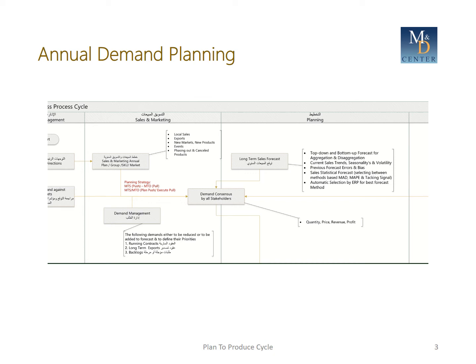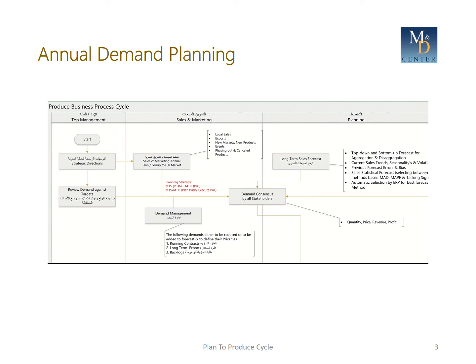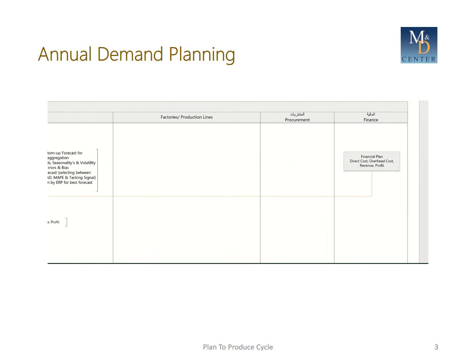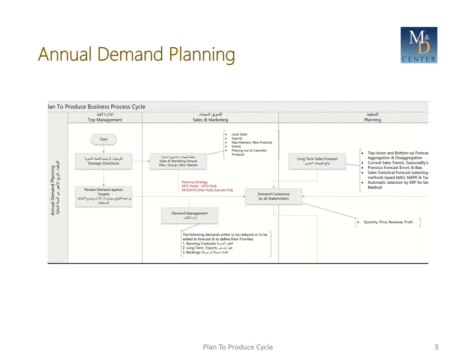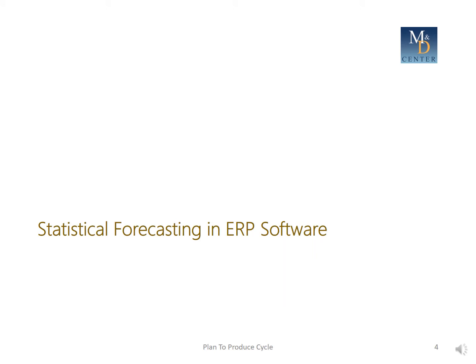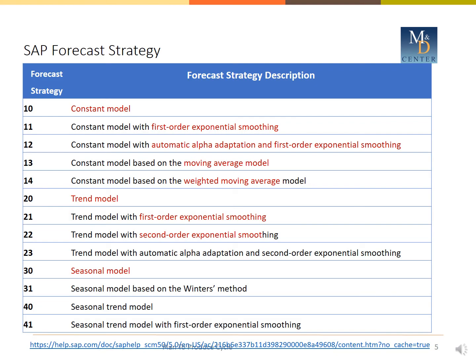There are many forecasting methods, and we select between them based on mean absolute deviation (MAD), mean absolute percentage error (MAPE), and tracking signal. If you have an ERP system, it can automatically select the best forecast method according to these measures. Then there will be a demand consensus meeting between all stakeholders including top management, considering running contracts and long-term export backlogs. Quantity, price, revenue, and profit will be discussed, and top management will review demand against targets to be approved by all stakeholders.